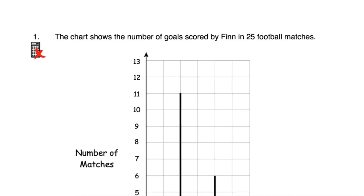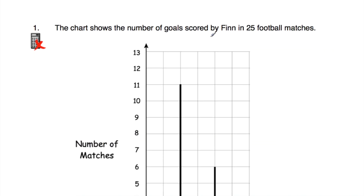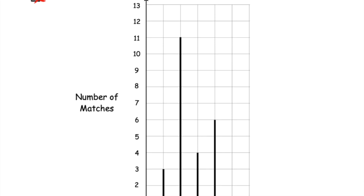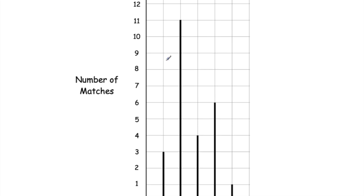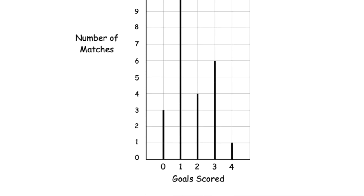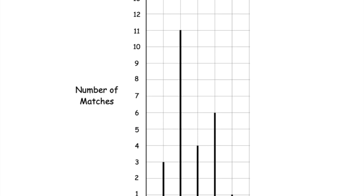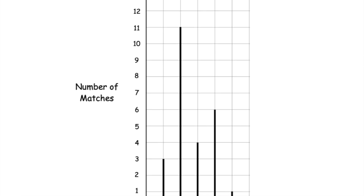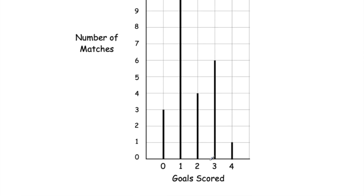Question number one: the chart shows the number of goals scored by Finn in 25 football matches. Looking at this vertical line chart, we've got the number of matches going vertically and horizontally we've got the number of goals scored. In three matches he scored no goals, one goal in 11 matches, two goals in four matches, three goals in six matches, and in one match he scored four goals.